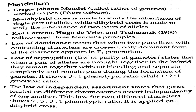The Law of Independent Assortment states that genes located on different chromosomes assort independently of one another. This law, for two different characters, shows a 9:3:3:1 phenotypic ratio. It is applied on dihybrid cross.